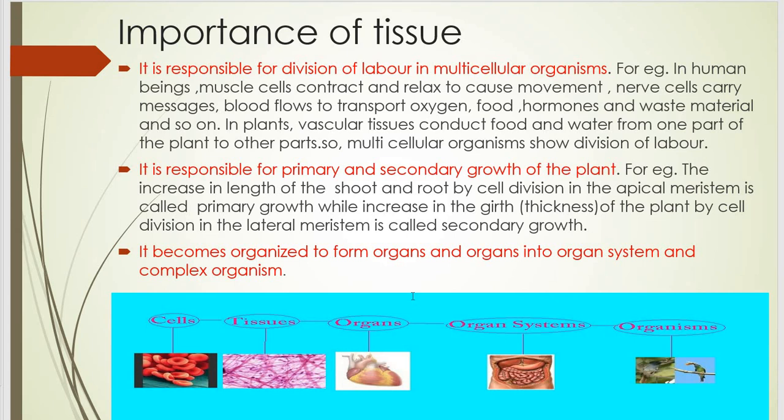Importance of tissue. The importance of tissue is as follows. It is responsible for division of labour in multicellular organisms. For example, in human beings, we find that muscle cells contract and relax to cause movement, nerve cells carry messages, blood flows to transport oxygen, food, hormones, and waste materials, and so on.